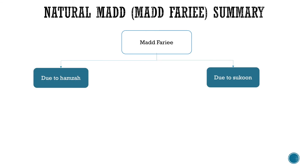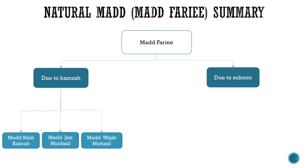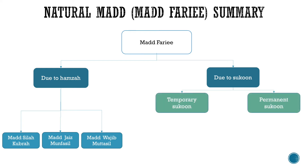As we have covered previously, مَدْ فَرْعِي consists of two branches: مَدْ بِسَبَبِ الْهَمْزَة and مَدْ بِسَبَبِ السُّكُون. مَدْ بِسَبَبِ الْهَمْزَة consists of three types of مَدْ: مَدْ صِلَة كُبْرَى, مَدْ جَائِزْ مُنْفَصِل, and مَدْ وَاجِبْ مُتَّصِل.